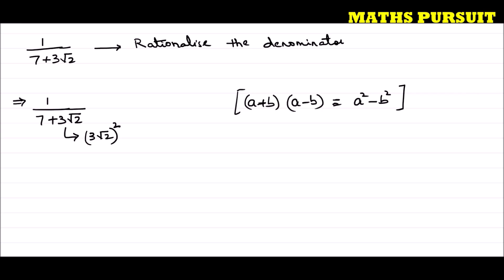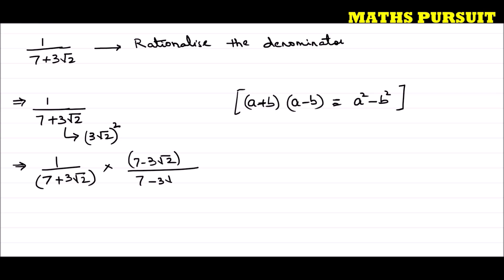So in order to make this a square, I am going to multiply the denominator by its conjugate. Since the denominator is 7 plus 3 root 2, I am going to multiply by 7 minus 3 root 2. If I am multiplying 7 minus 3 root 2 in the denominator, I am also going to multiply 7 minus 3 root 2 to the numerator, so that the overall effect remains the same.